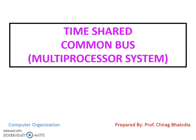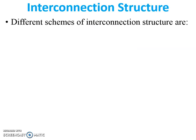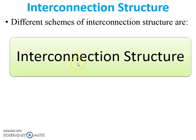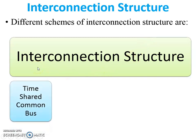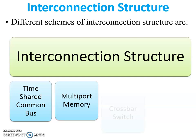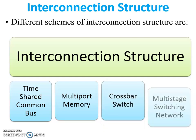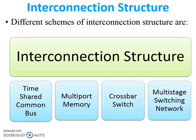Hello friends, myself Chirak. Today I am going to discuss with you the Time-shared Common Bus Multi-Processor System topic of computer organization and architecture. There are four different schemes in the interconnection structure of a multi-processor system: first, Time-shared Common Bus; second, multi-port memory; third, crossbar switch; fourth, multi-stage switching network. Today we will discuss Time-shared Common Bus.